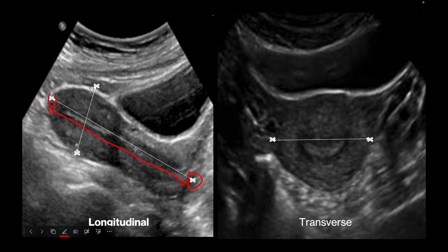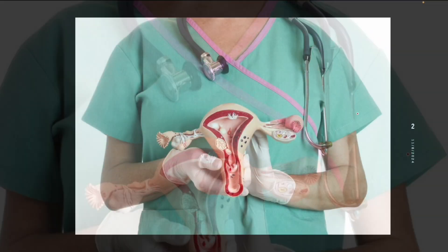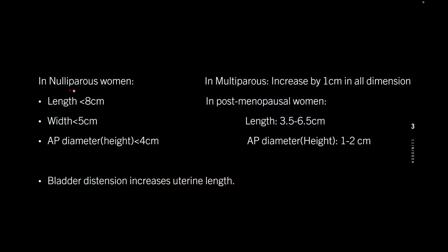Similarly, we take the height or anterior-posterior diameter of the uterus in the mid-sagittal plane from outer to outer serosal surface — so this is the height of the uterus. Uterine width is measured in the transverse plane, like this.